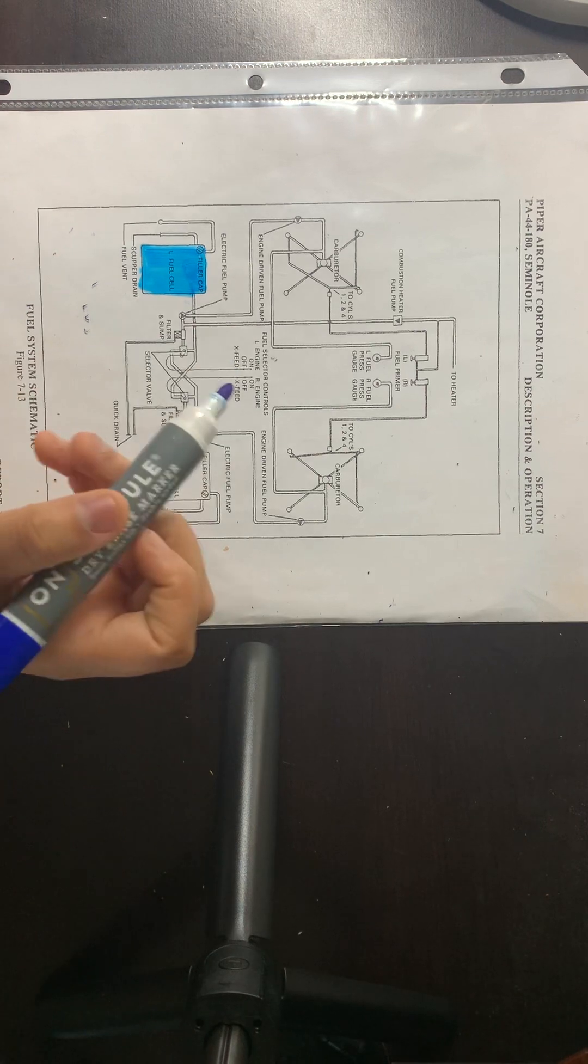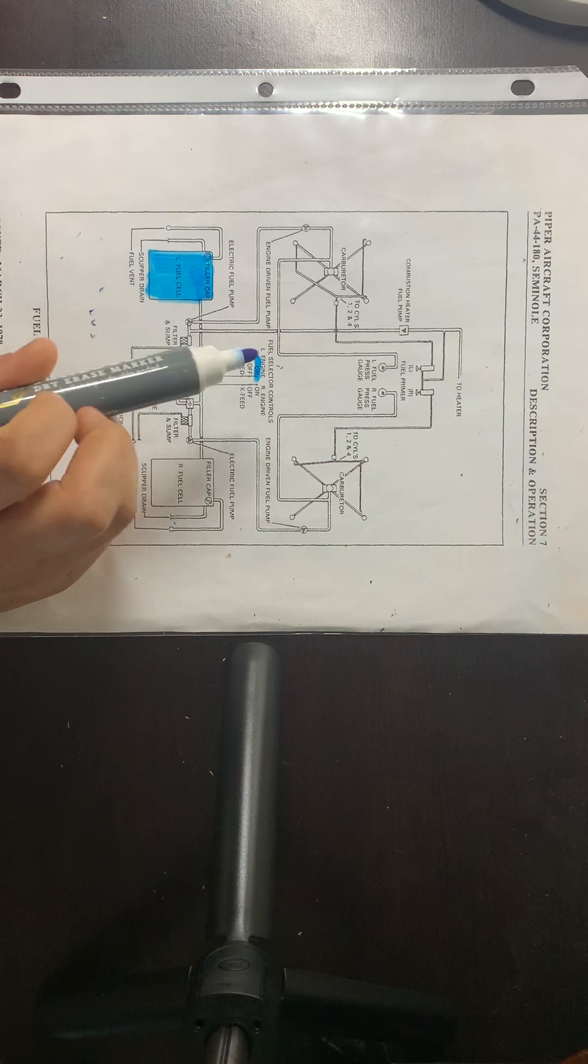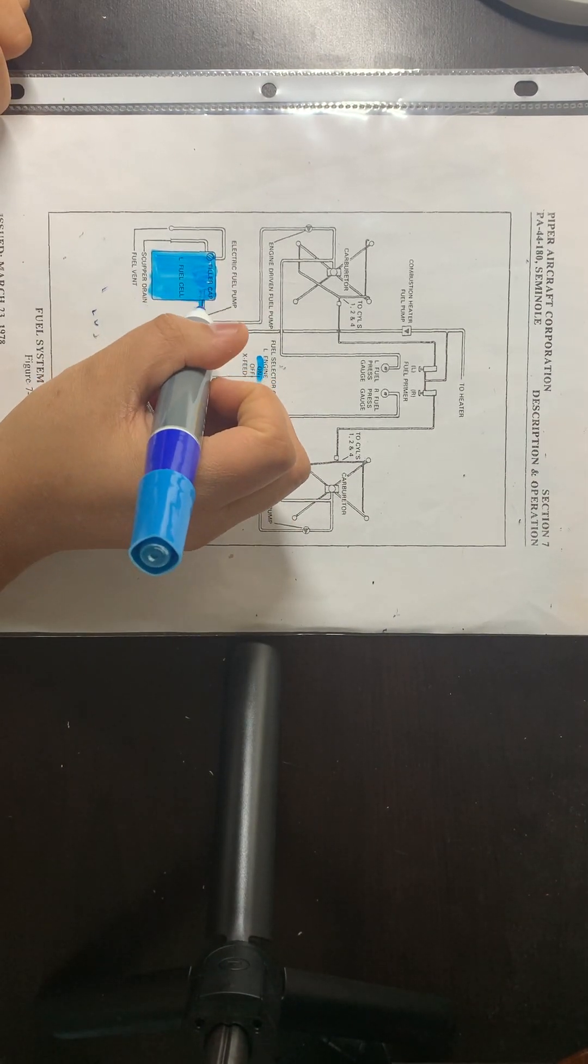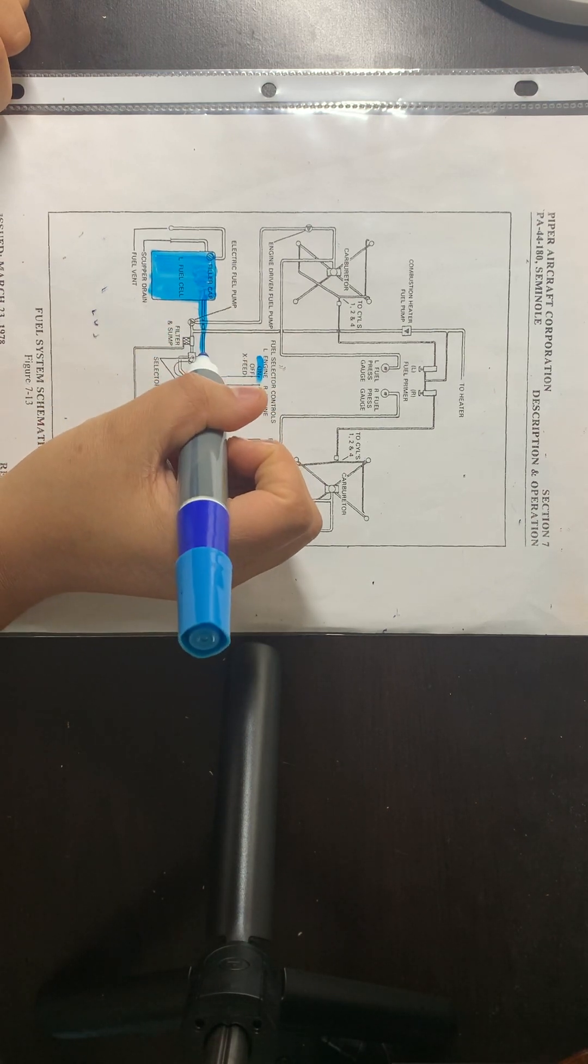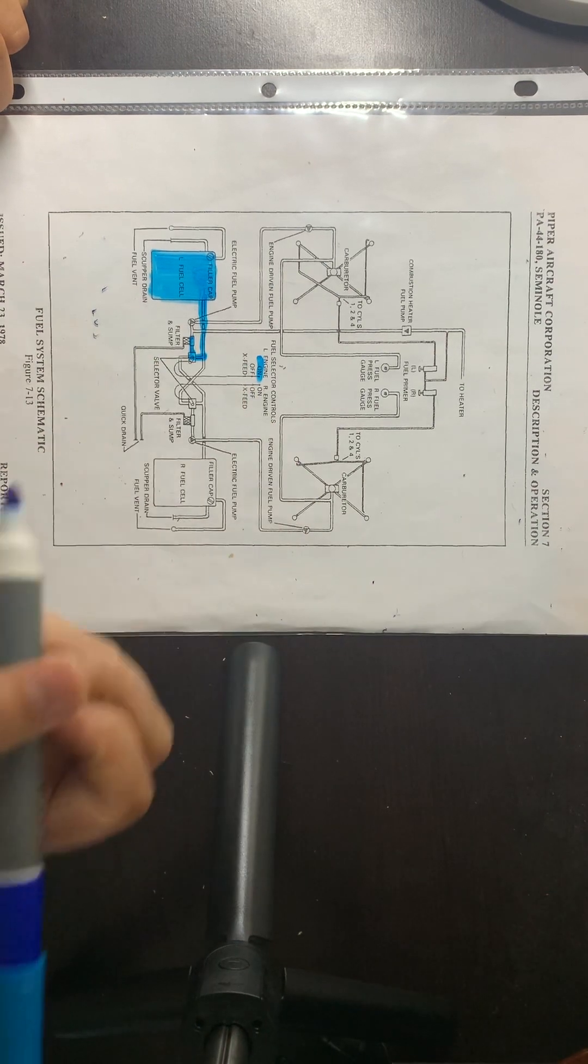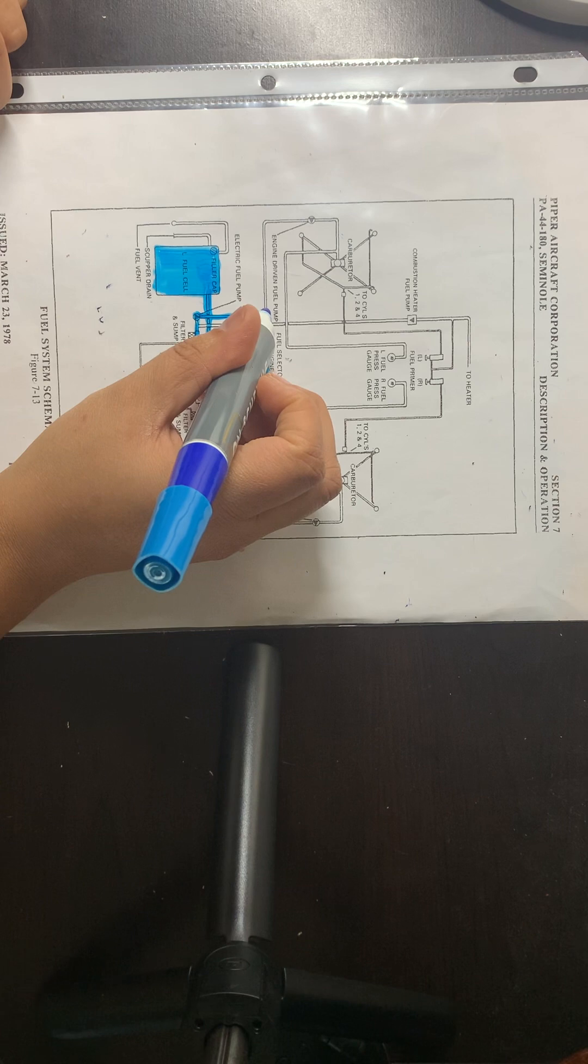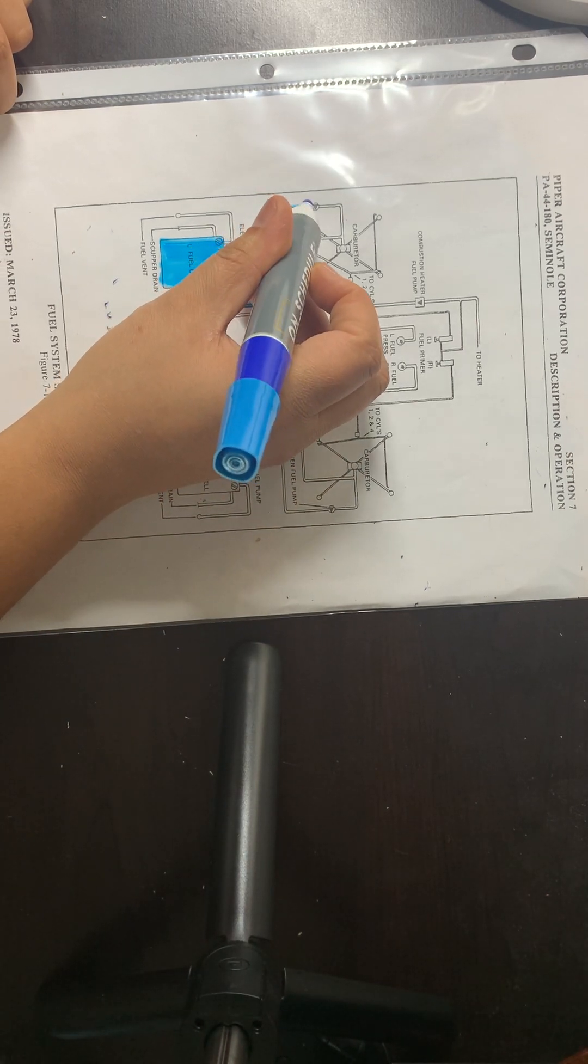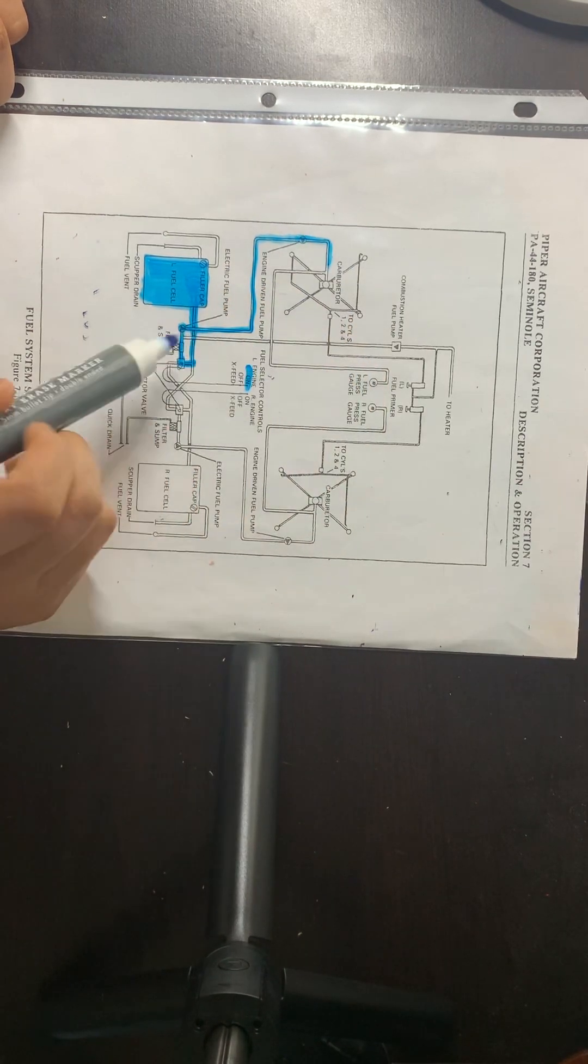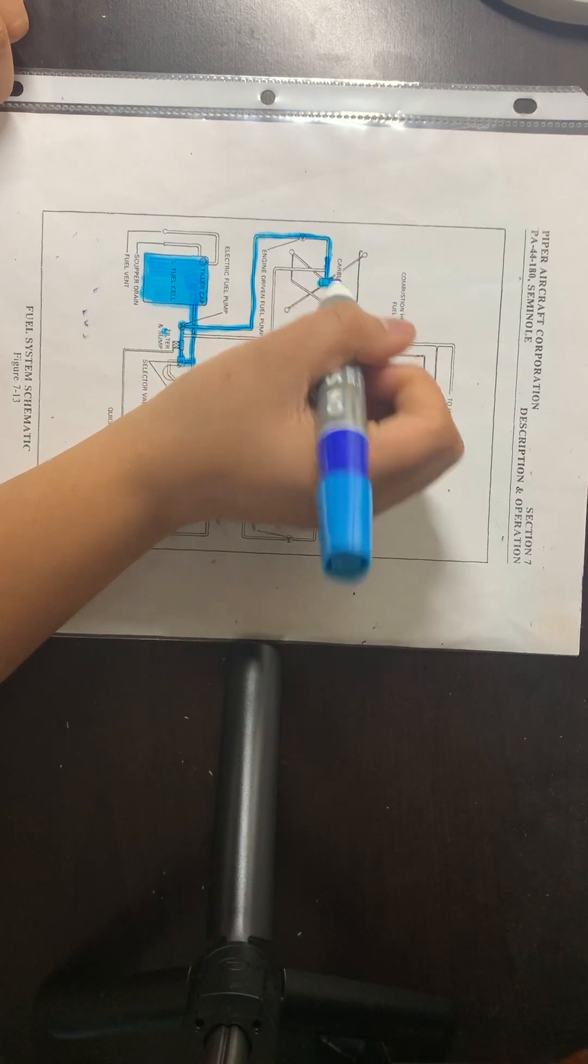When our left tank is on, this is what it does: the fuel comes out of the fuel cell, goes into the selector valve, into the filter, goes up into the engine driven fuel pump—and by the way this is the electrical fuel pump down here—into the carburetor and then into the cylinders.